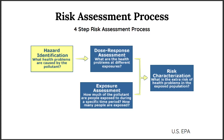Next up is the dose-response assessment, which is really just a process of asking: if there's a certain amount of this thing in the environment, what are the health problems at different levels of exposure? High levels of air pollution are worse than lower levels, same goes for water pollution. The third step, which goes in parallel, is the exposure assessment step that asks: how many people are exposed to it, how long are they exposed, and are there susceptible windows or susceptible populations — like infants or marginalized communities — that are exposed?